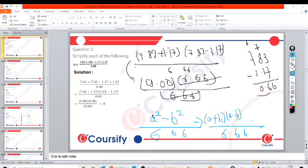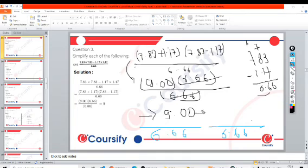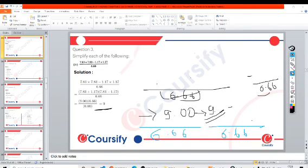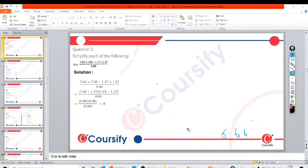Now we can cancel this one. So what do we do? We have kept 7.83 as a and 1.17 as b. We have an identity in a square minus b square, and we have learned that a plus b times a minus b term.